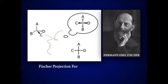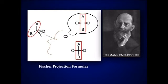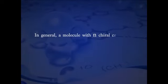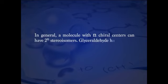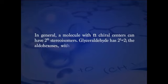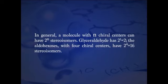One of these two forms is arbitrarily designated the D-isomer, the other is the L-isomer. To represent three-dimensional sugar structures on paper, we often use Fisher Projection Formulas. By convention, in Fisher Projection Formulas, horizontal bonds project out of the plane of the paper towards the reader. Vertical bonds project behind the plane of the paper, that is away from the reader. In general, a molecule with N chiral centers can have 2^N stereoisomers. Glyceraldehyde has 2^1 = 2 stereoisomers. The aldohexoses with 4 chiral centers have 2^4 = 16 stereoisomers.